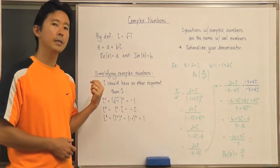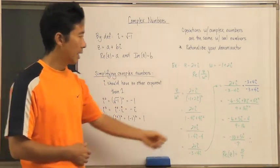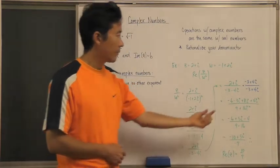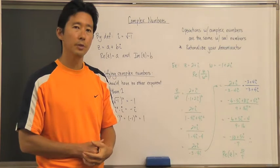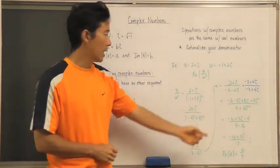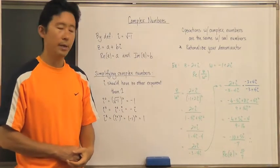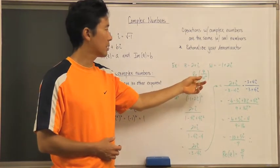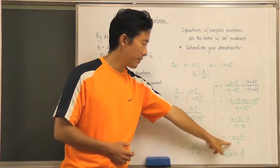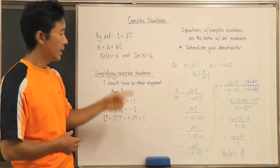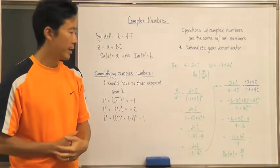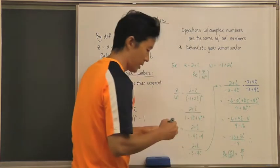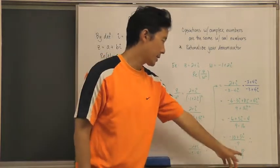We still have i squared terms with exponents other than one, so we substitute i squared equals negative one throughout. Applying the same algebraic rules as with real numbers, we simplify to negative ten plus five i, divided by negative seven. This gives us a clean complex number, and the real part of z over w squared is ten over seven.